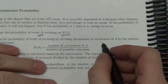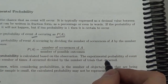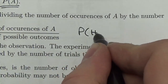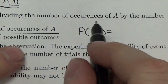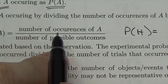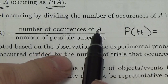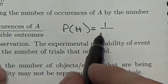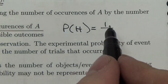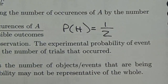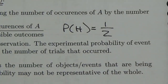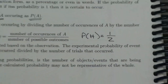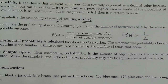If you're looking for the probability of flipping a head on a coin, there's only one way to get that head, but there are two possible outcomes when you flip the coin. So that's how we get a probability of 1 over 2, which you're already familiar with.